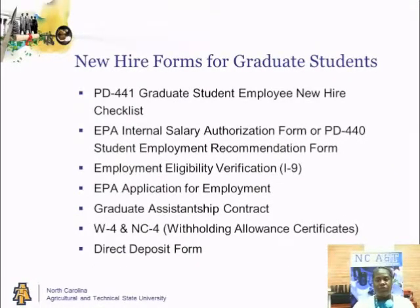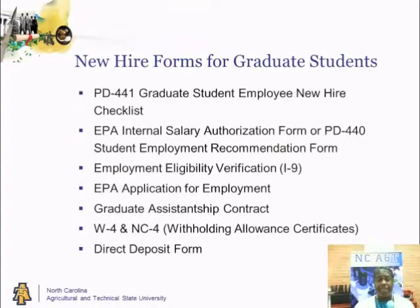I want to go over the new hire forms for graduate students. Most of these forms will be completed by the hiring department on your behalf. There is a PD-441 Graduate Student Employee New Hire Checklist, EPA Internal Salary Authorization Form, or the PD-440 Student Recommendation Form, Employment Eligibility Verification Form (Form I-9), the EPA Application for Employment, Graduate Assistantship Contract, the W-4 and NC-4 Withholding Allowance Certificates, as well as the Direct Deposit Form.